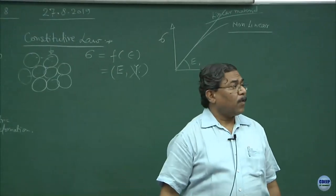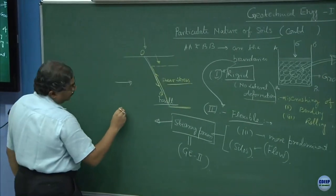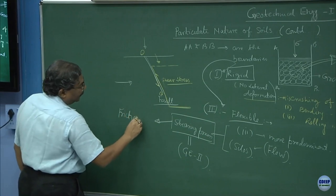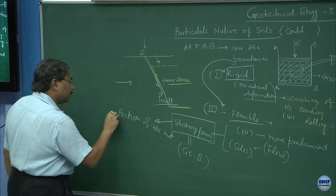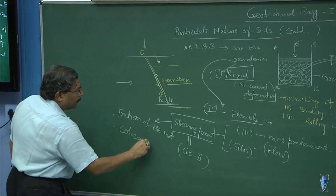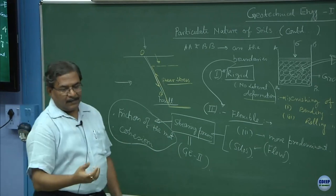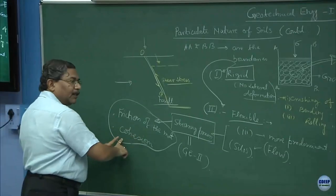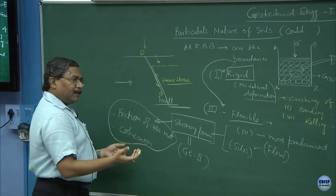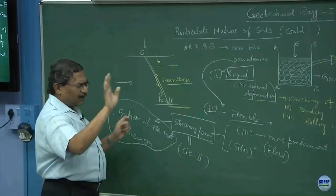What is the difference between cohesion and friction? These are the two components of shear strength. Shear strength can be mobilized either by friction of the material or because of cohesion. Material can behave in a cohesive manner — uniform clays are mostly cohesive. We will discuss this later.